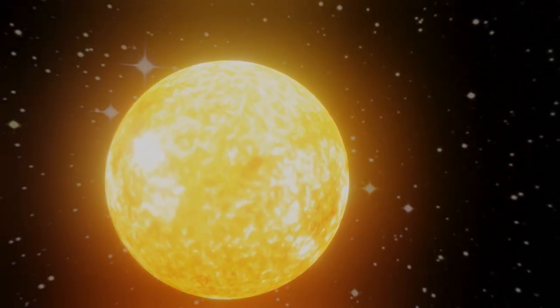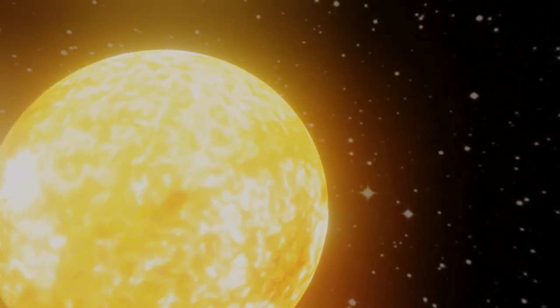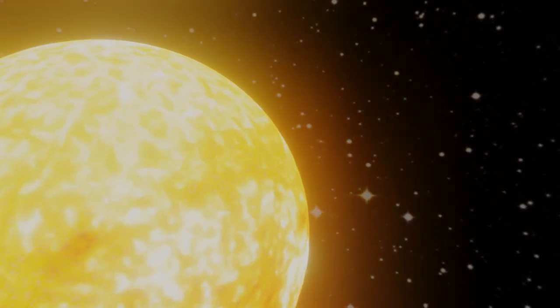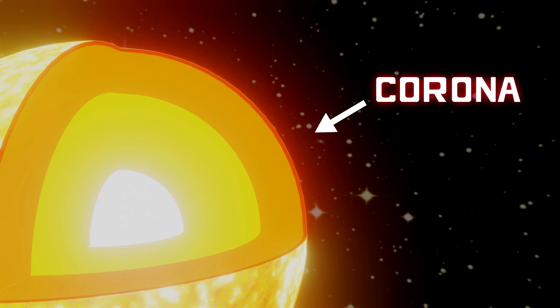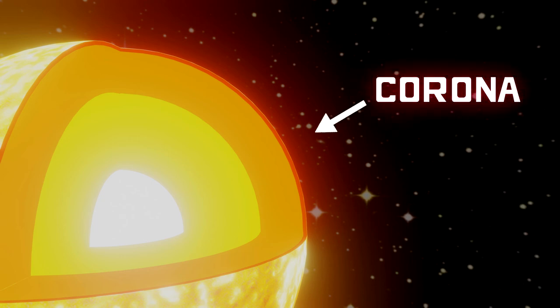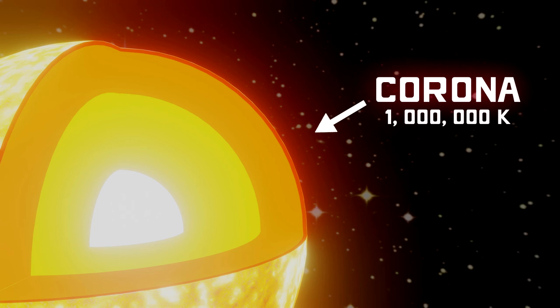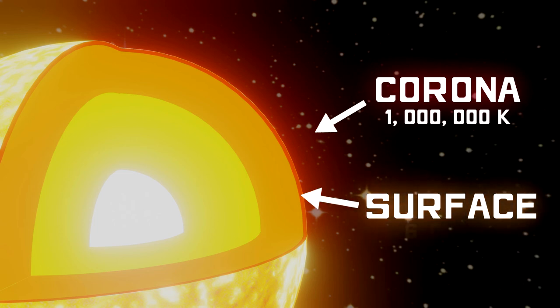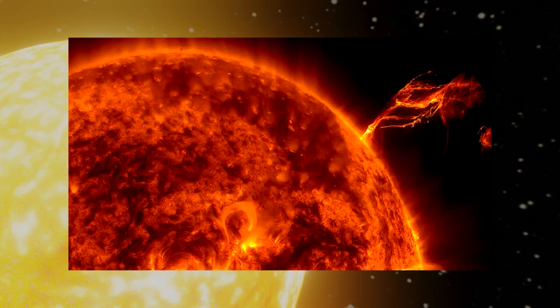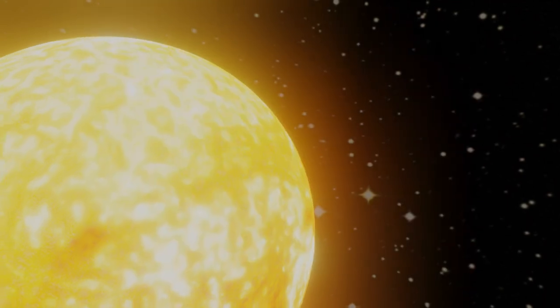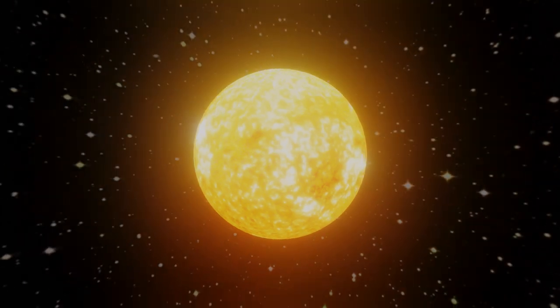Coronal mass ejections, or CMEs, consist of a huge amount of plasma traveling at a much higher velocity coming from the extremely hot layer of the Sun, called the corona, which can reach staggering temperatures of one million degrees Kelvin, compared to the surface's meager 6000. These CMEs are often associated with solar flares, or solar prominence eruptions, but CMEs can still occur independently of these events.